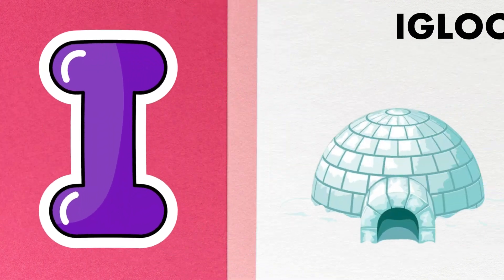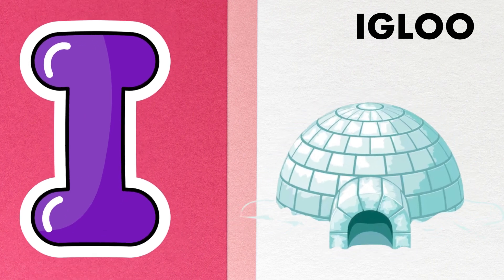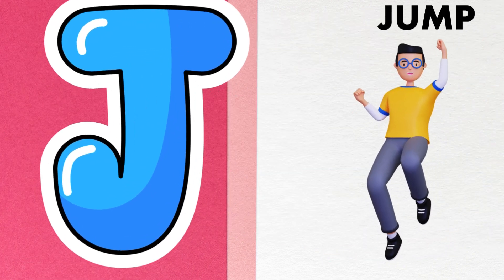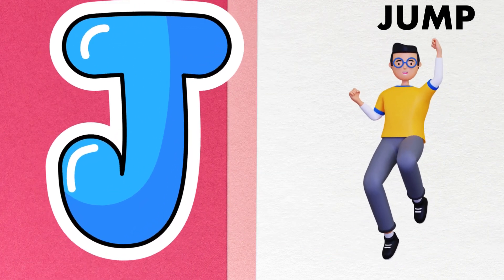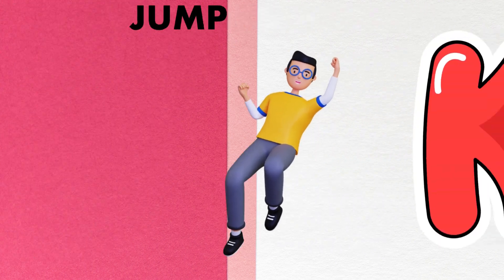I is for igloo, i-i-igloo. J is for jump, j-j-jump.